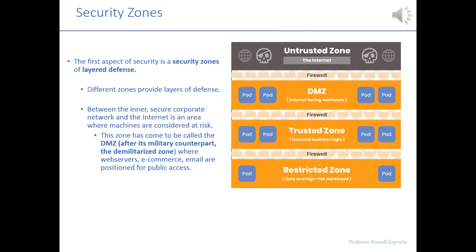Let's get deeper into network security and talk about security zones. The untrusted zone at the top is the wild wild west — the internet. There's a firewall right beneath that, and then something called the DMZ, the demilitarized zone, where the external world can communicate with a company. That's where your web servers are, your e-commerce systems — like Amazon or Walmart's computers that you interact with. You never really get past the second firewall in the middle, because beneath it is the trusted zone: the corporate business logic, applications, and data.